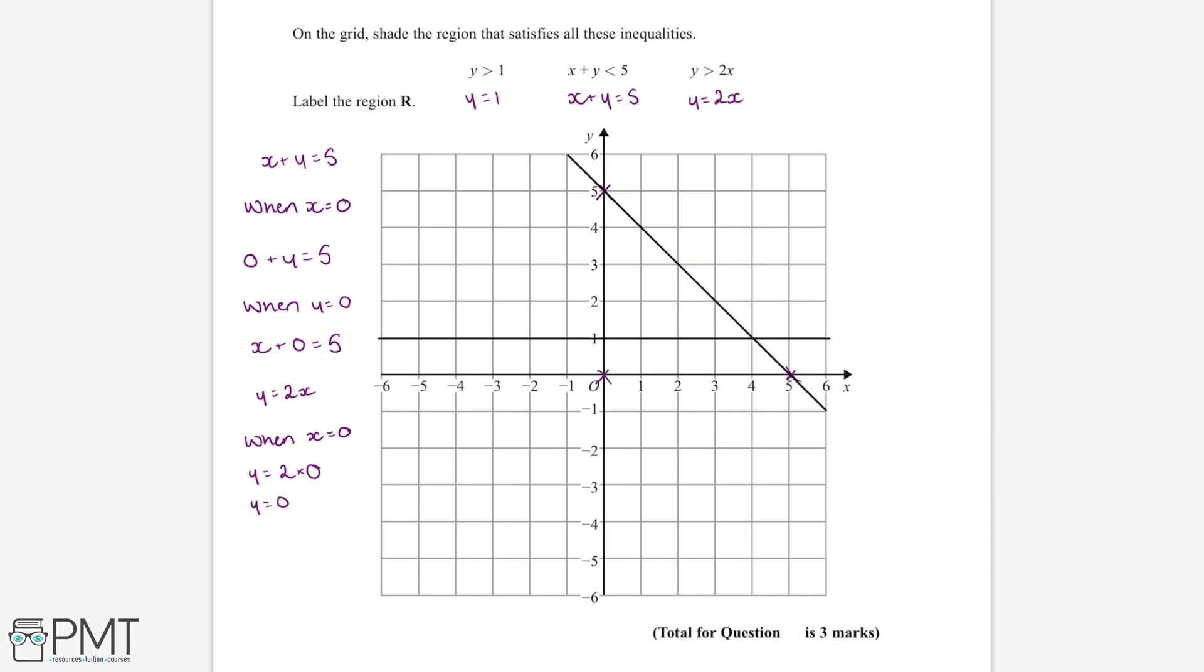So next we can substitute x equals 2 into this equation. So when x equals 2, y equals 2 multiplied by 2. So therefore y equals 4. And again we can plot this point on our grid. And using a ruler we can join up these points.